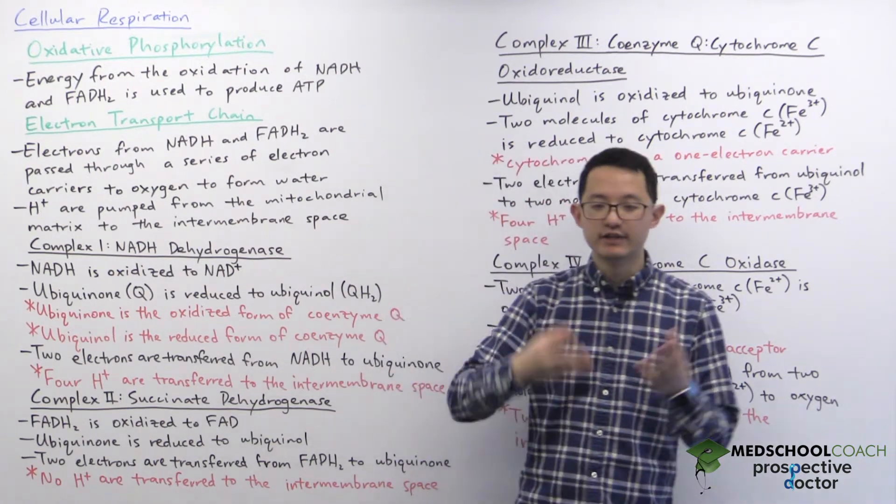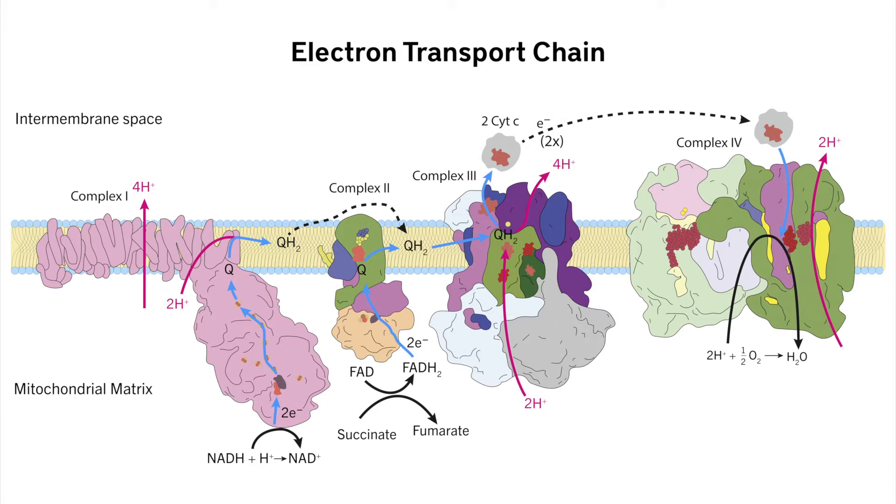And in this diagram you can see a schematic of how the electron transport chain works. We have four complexes: 1, 2, 3, and 4. And there are two pathways. One is with NADH, which uses complexes 1, 3, and 4. And the second pathway is for FADH2, which uses complexes 2, 3, and 4. So as electrons are transferred from NADH and FADH2 ultimately to oxygen, you can see how protons are pumped from the mitochondrial matrix to the intermembrane space.